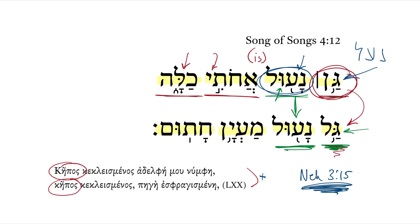Then we get another word for spring — we might say 'fountain' to give it variety, or 'headwaters,' 'source waters' — sealed. The root here is chet-tav-mim, meaning 'sealed.' We have again another passive participle with that shurik as the thematic vowel. So: 'of spring, sealed.'